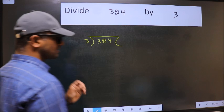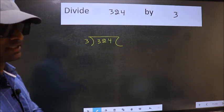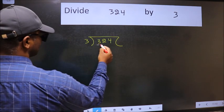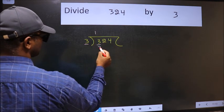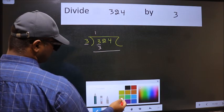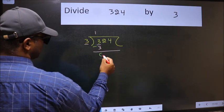This is your step 1. Next, here we have 3. Here also 3. When do we get 3 in 3 table? 3 once 3. Now we should subtract. We get 0.